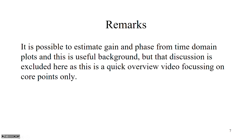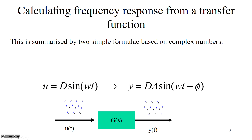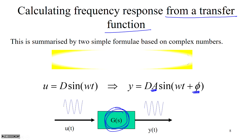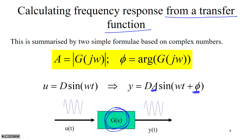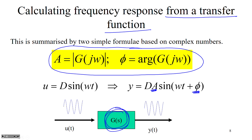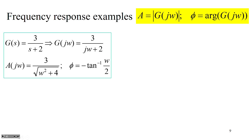It is possible to estimate gain and phase from time domain plots, but what we need to focus on is how to actually calculate the frequency response from a transfer function. For a linear system G(s), there are very simple formulas: A is the modulus of G(jω), and φ is the argument of G(jω). These are very simple formulas you can use to calculate the gain and the phase.